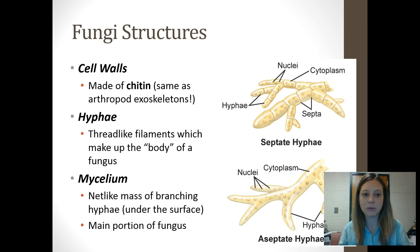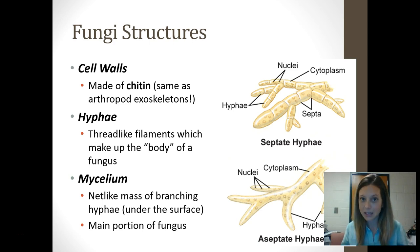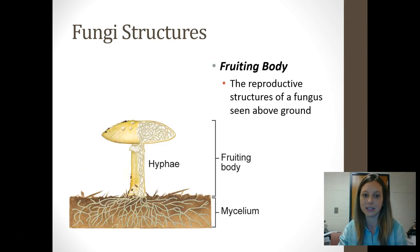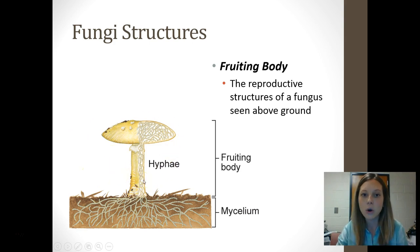Some fungi structures you need to know: they have cell walls made of chitin, which is the same compound that makes up the exoskeletons of arthropods like insects. They have structures called hyphae, which are the thread-like filaments that make up the body of a fungus. That thread-like mass underground is called the mycelium, and it's actually the mycelium that is the main portion of the fungus. The part you see and recognize is just the reproductive part — the real body of the fungus is underground.